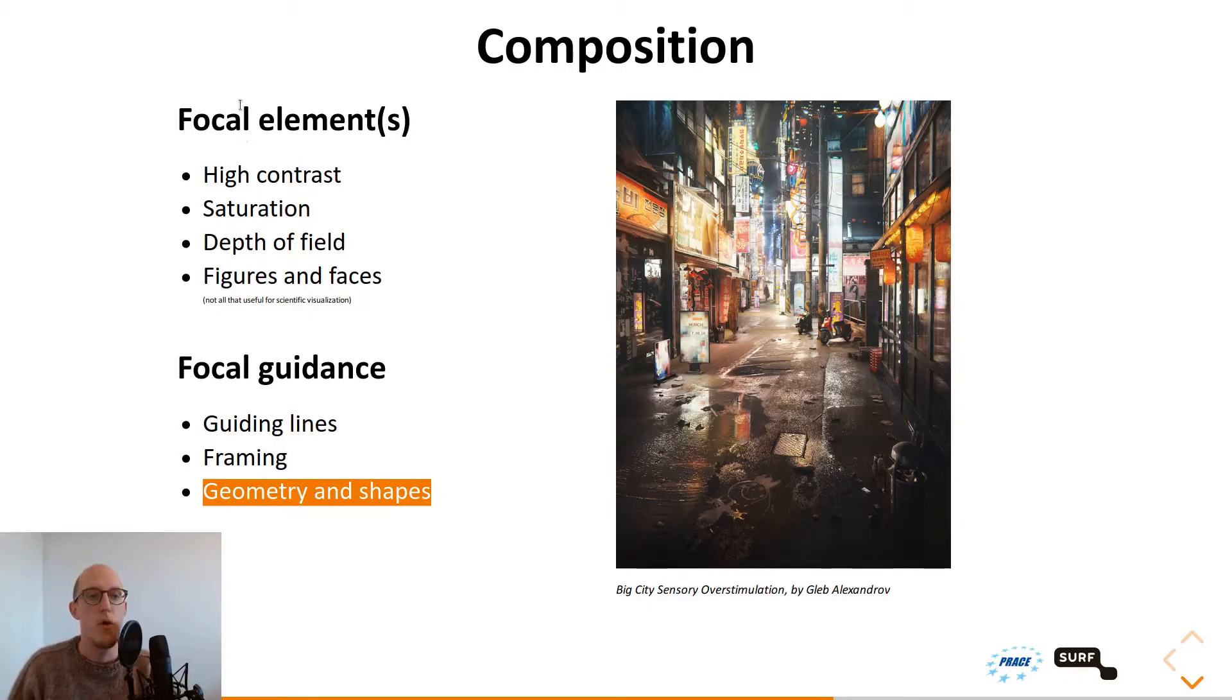A good example for both focal elements and vocal guidance is the image to the right from Klep Aleksandrov. You can see already when you kind of squint your eyes, you already see a light oval shape of all the neon signs and all the lit up signs that are around the central object, which is this little person over there, which is already a figure, a focal element itself. And also the perspective all points toward the same person. So these are the guiding lines we were talking about. And this way you have a nice balanced image where you immediately look around and find eventually this figure in the middle. This is a very good composition.